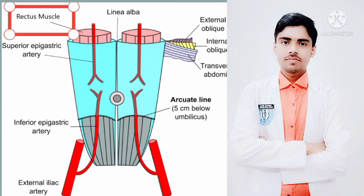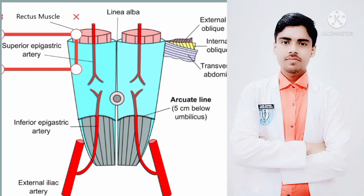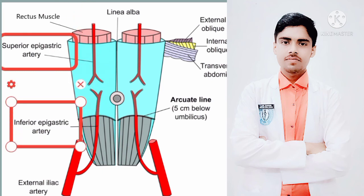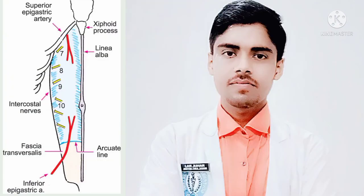Now we will discuss about the arterial content of the rectus sheath. As you can see in the figure, the arterial content consists of the superior epigastric artery and the inferior epigastric artery. The venous content of the rectus sheath includes the superior epigastric venae comitantes and the inferior epigastric venae comitantes.